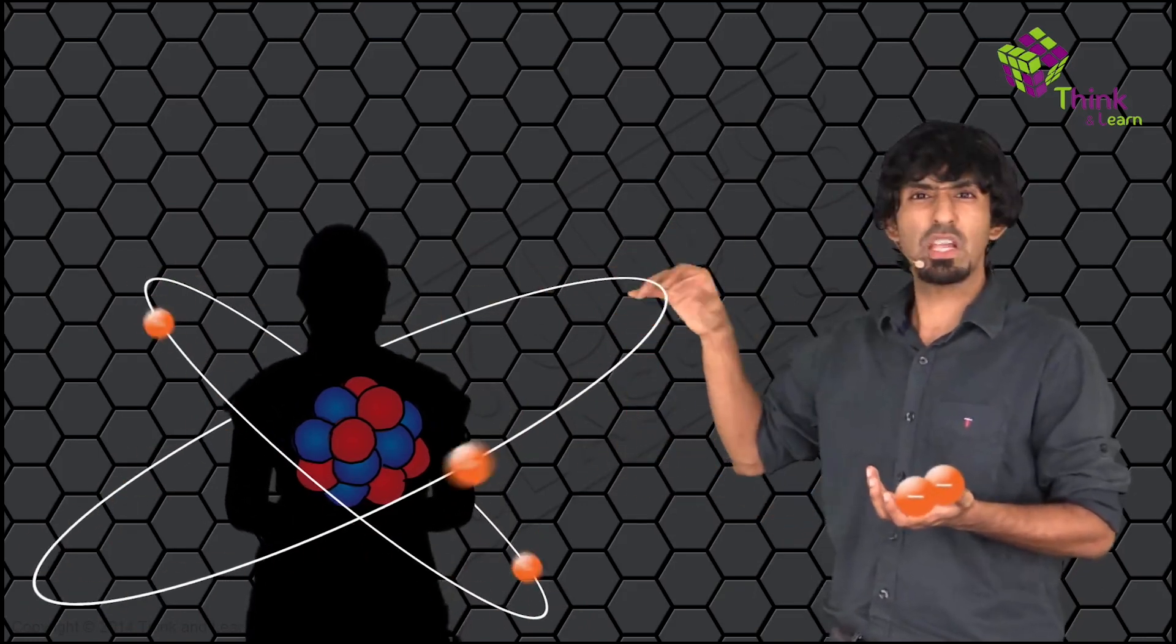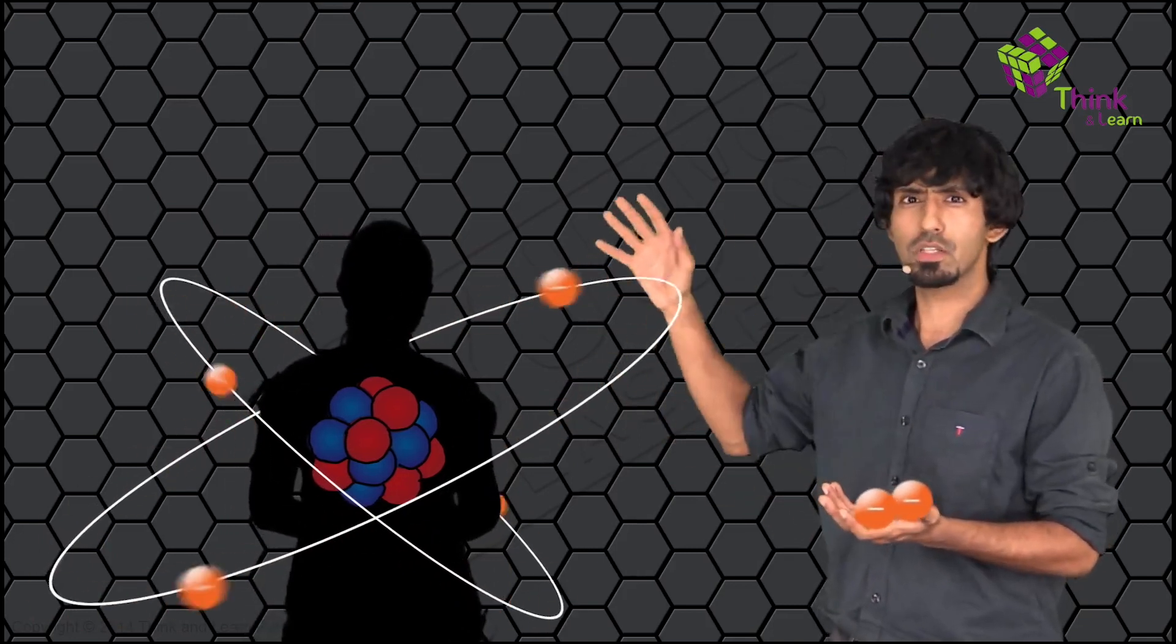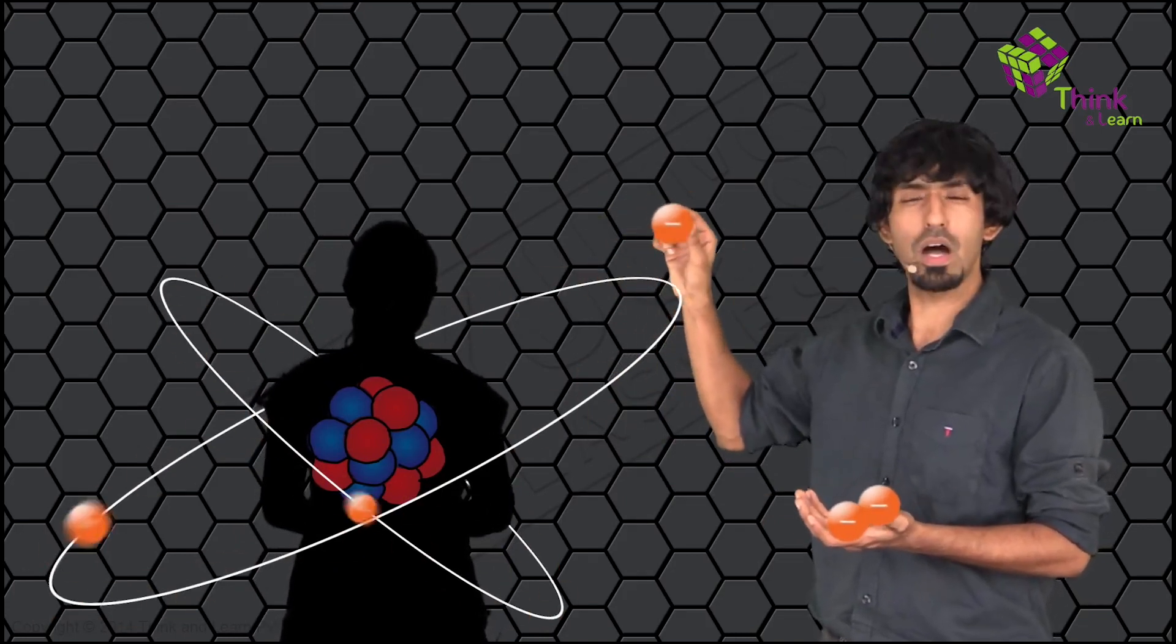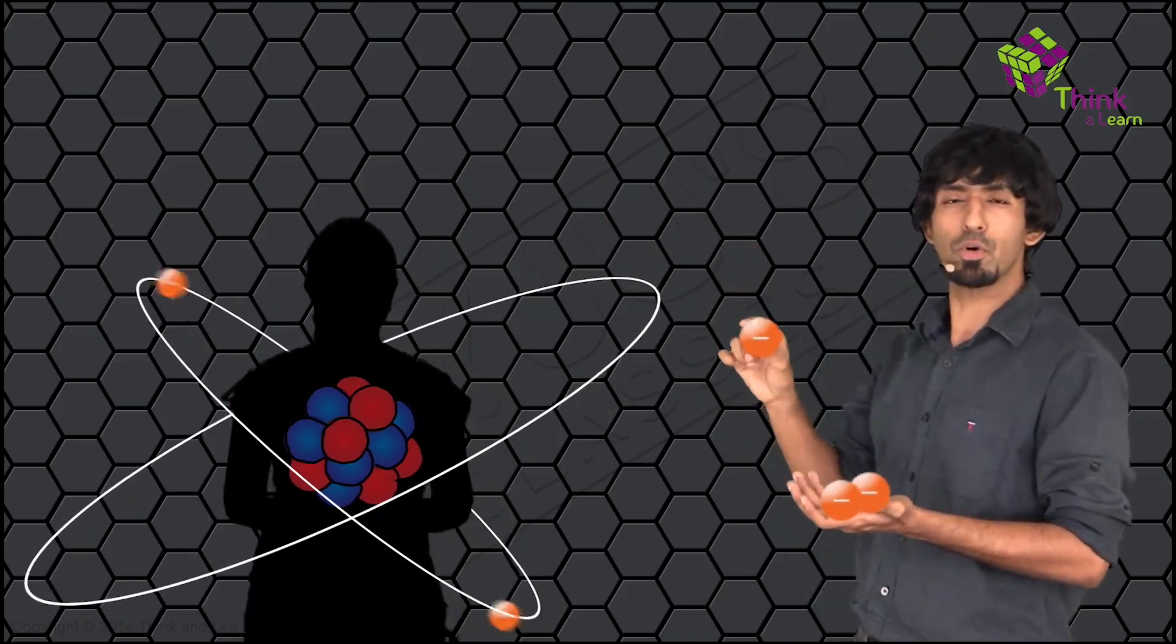So now the electrons are feeling more and more attraction. So I have two with me, that itself was hard. If I have to pull the third one, it's going to be even harder. So as I try to pull the third carbon out, it's becoming harder and harder. Because the pull is becoming more and more and more.